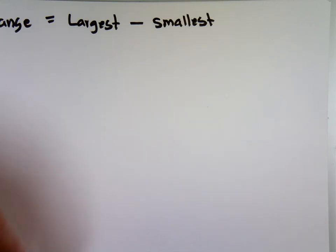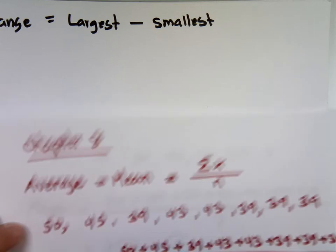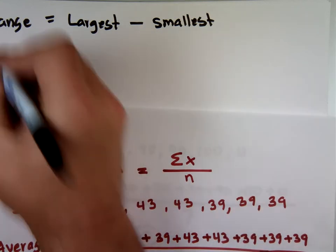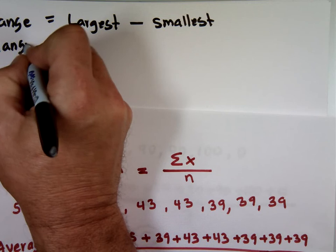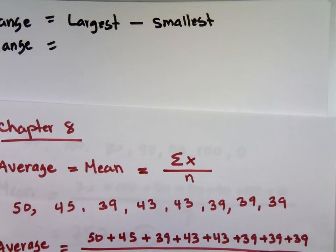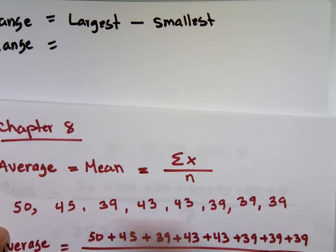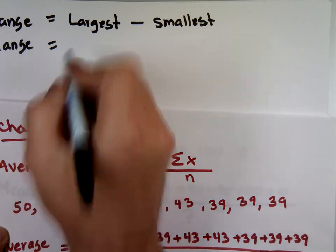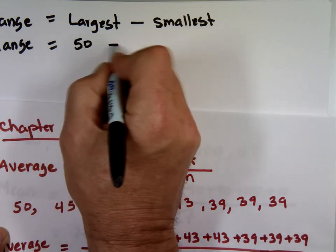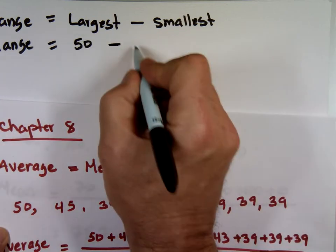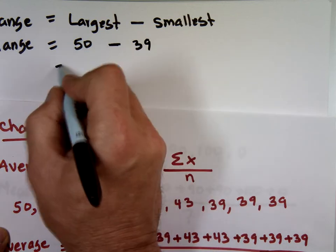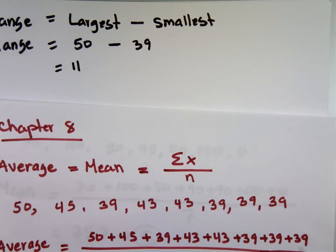So when we go back to temperature, what was the range of temperature during those eight days? Here are the temperatures. What was the highest value? 50. What was the lowest value? 39. The range is 11 degrees. The swing between the coldest and the warmest is going to be 11 degrees.